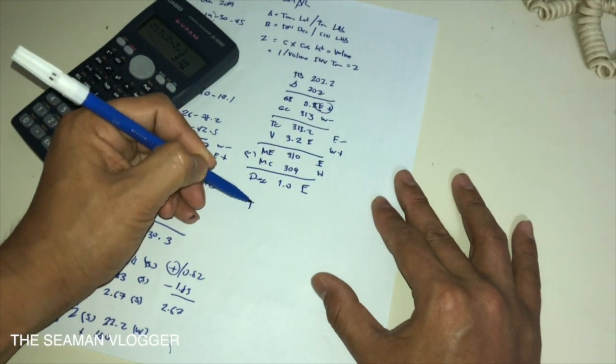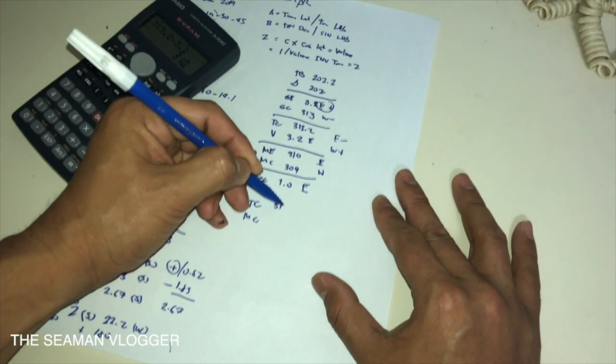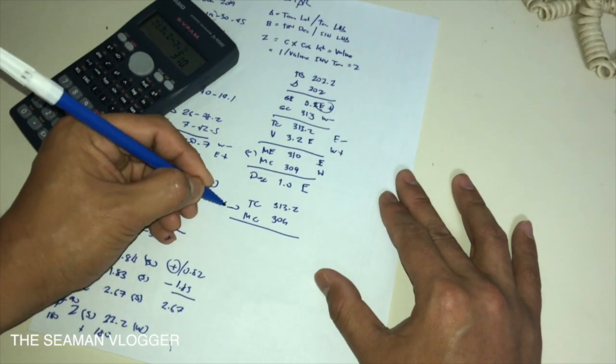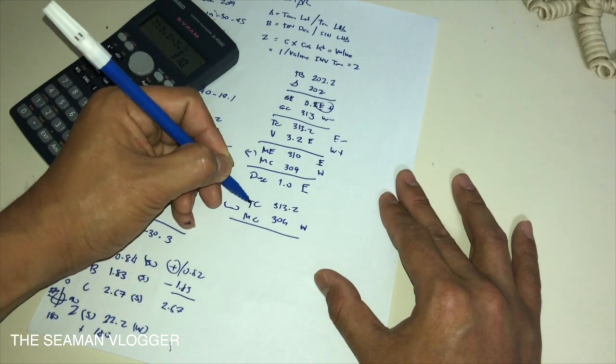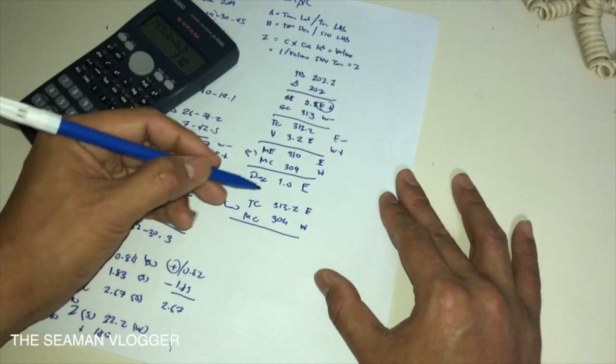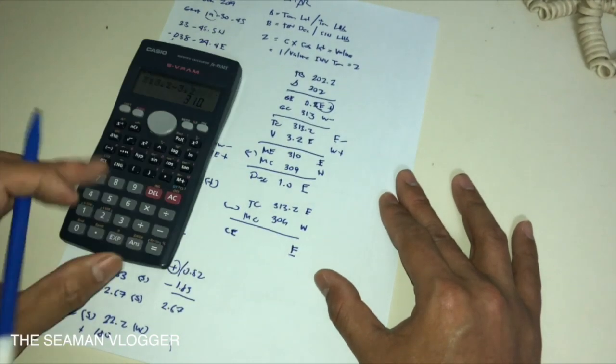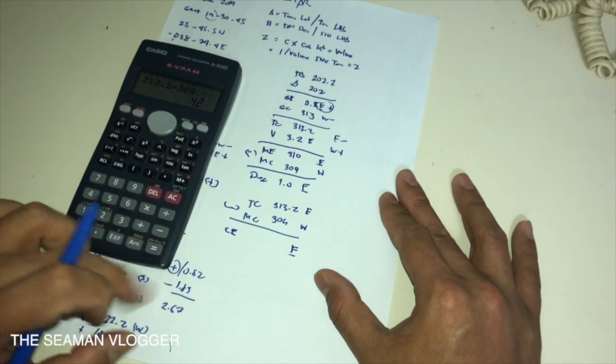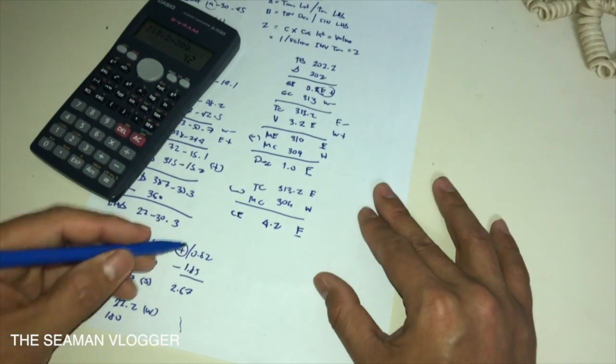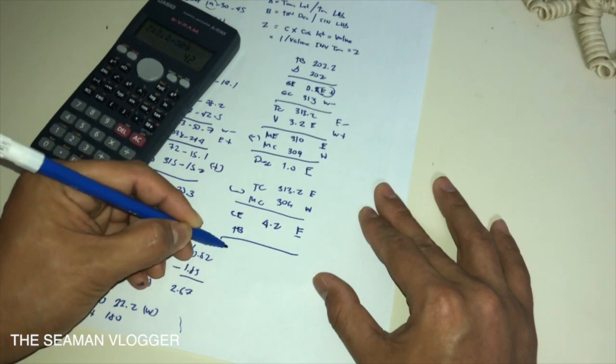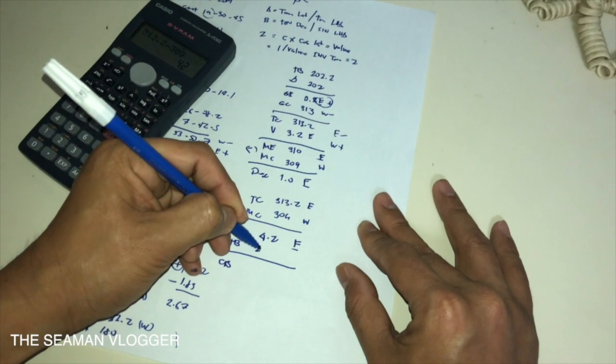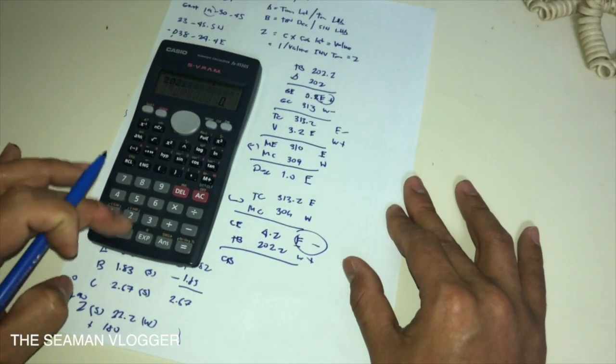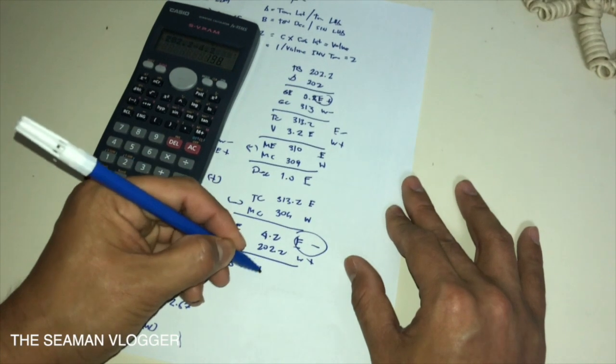Then true course. My true course 313.2, magnetic 309. This is always minus. And if MC is greater west, this one is greater east. I have true course is greater, so it will become east. Compass error: 313.2 minus 309, so it's 4.2 degrees. The compass error is 4.2 east. Then next, true bearing equals gyro bearing. True bearing 202.2, east minus west plus. I have east, so it will become minus. 202.2 minus 4.2 equals 198.